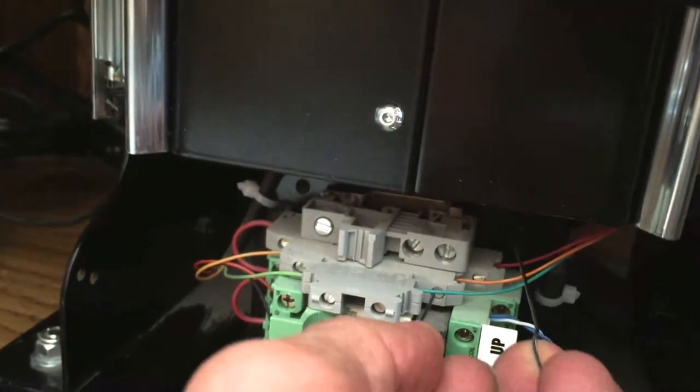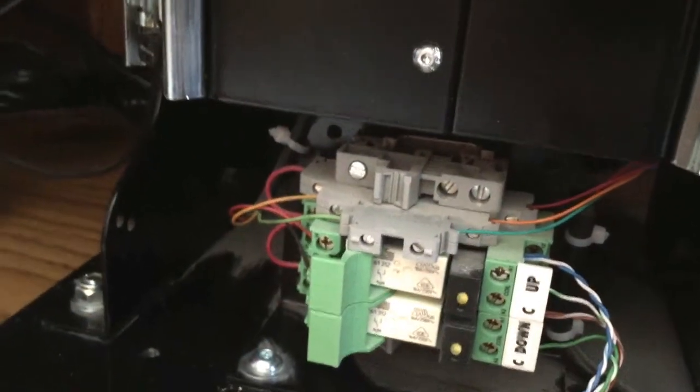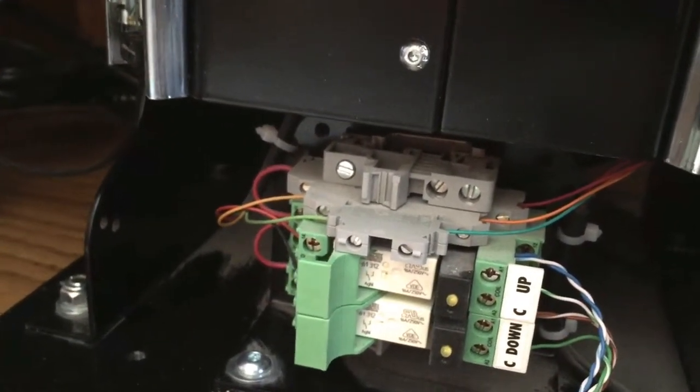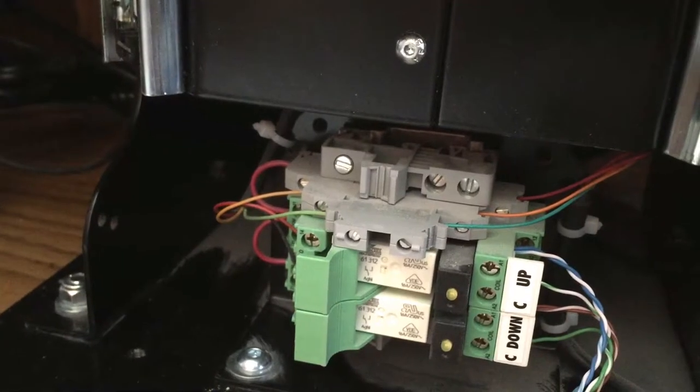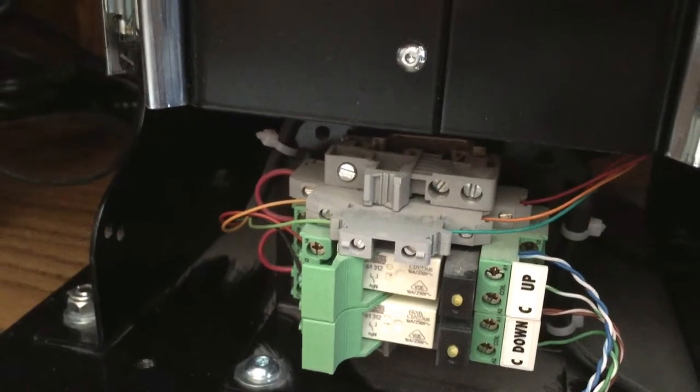So I took the paperclip, touched the end into both screws, and it lowered the podium. And we didn't lower it all the way doing that, just enough so that the podium was lowering, and after that, the control panel works again.